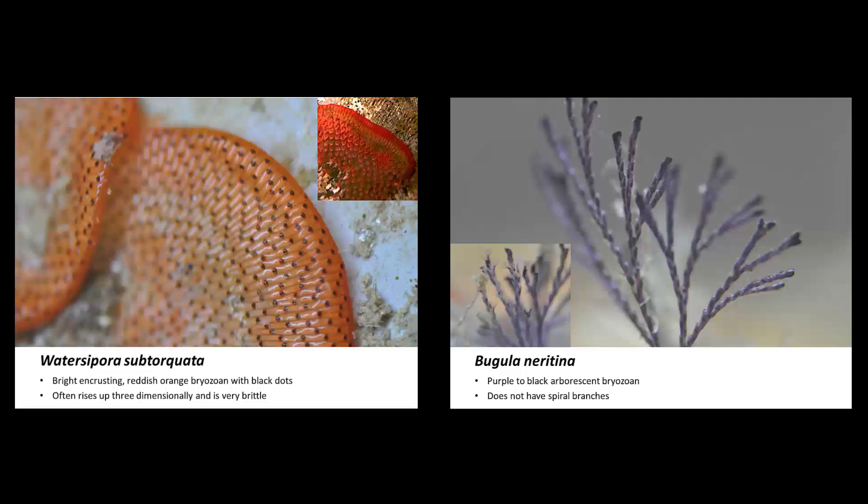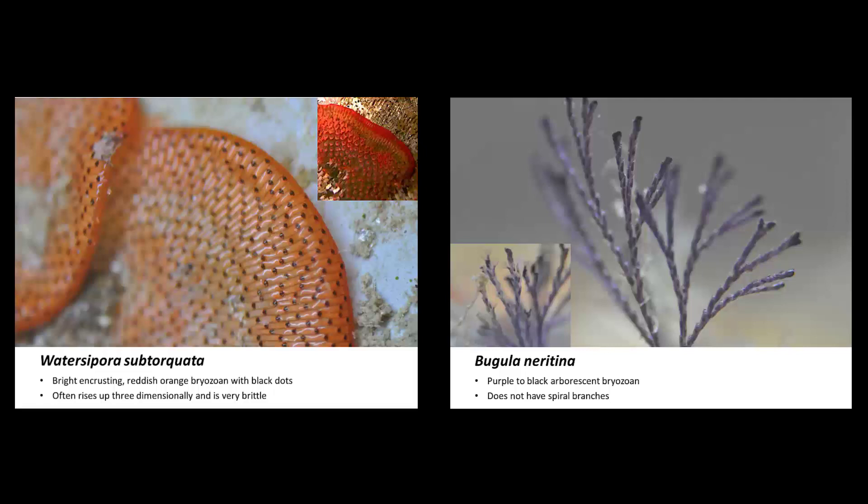Another type of organism you may find are bryozoans. They're very variable in their form, but they are also a colonial type of organism. In lab, one way to tell them apart from tunicates is that tunicates are very soft when you touch them, and bryozoans are more crusty. That's due to the bryozoans having calcium inside their structure.